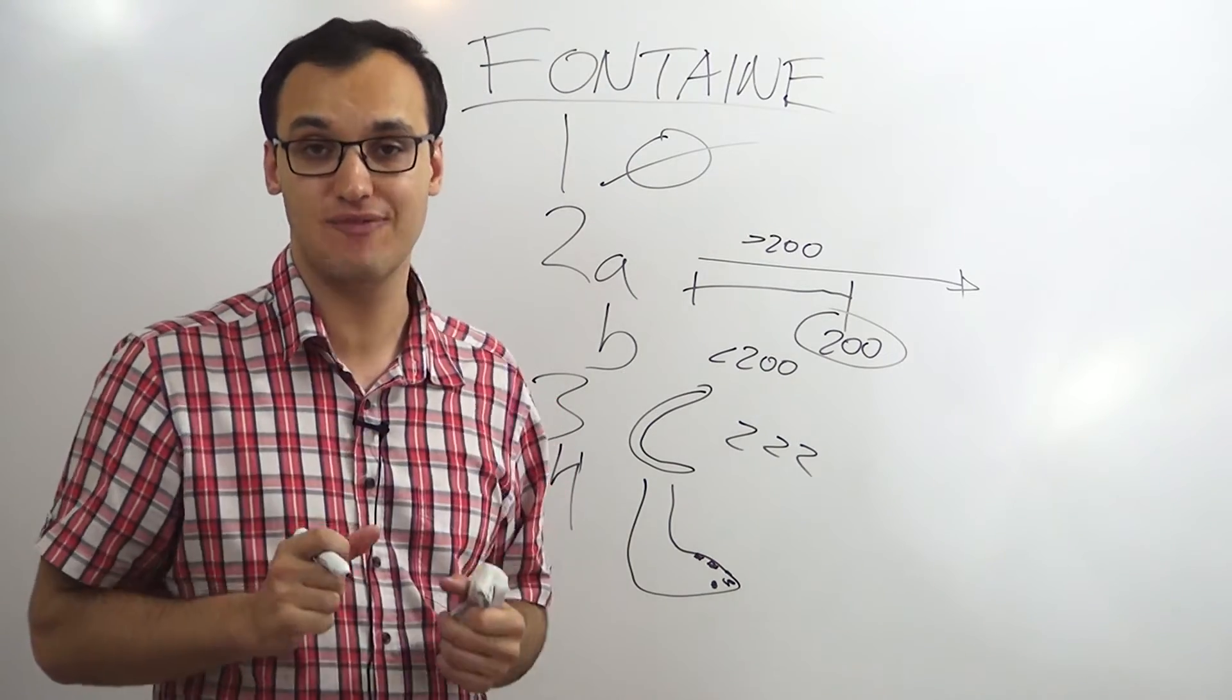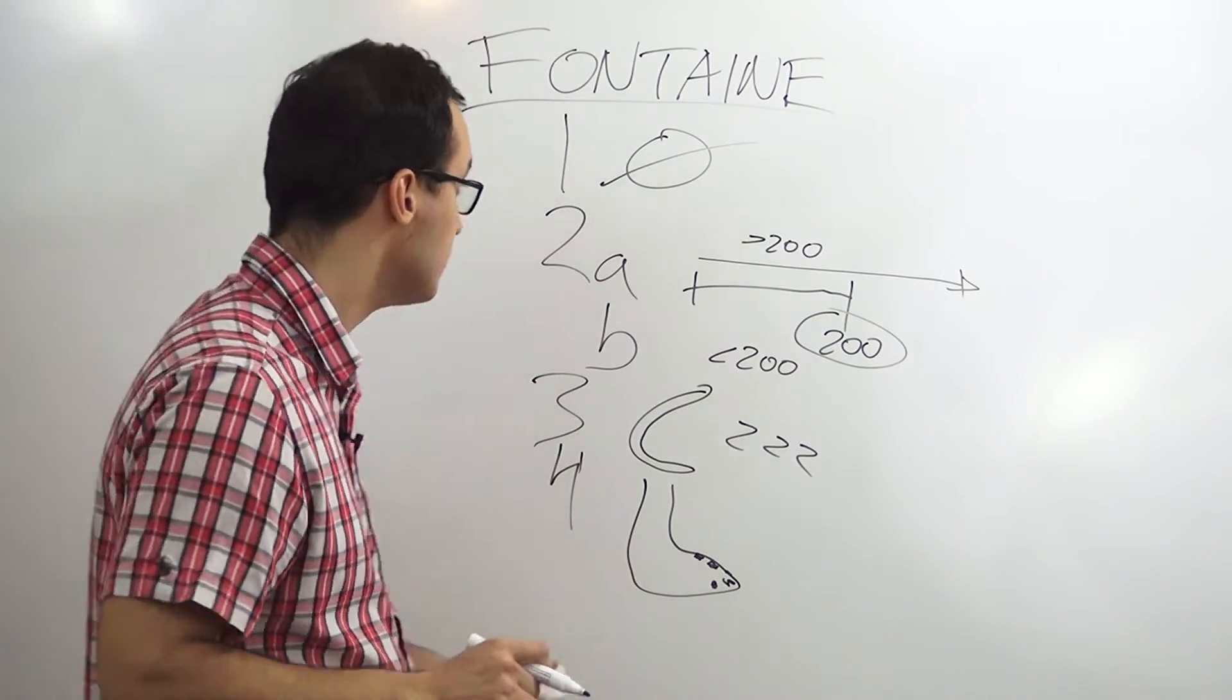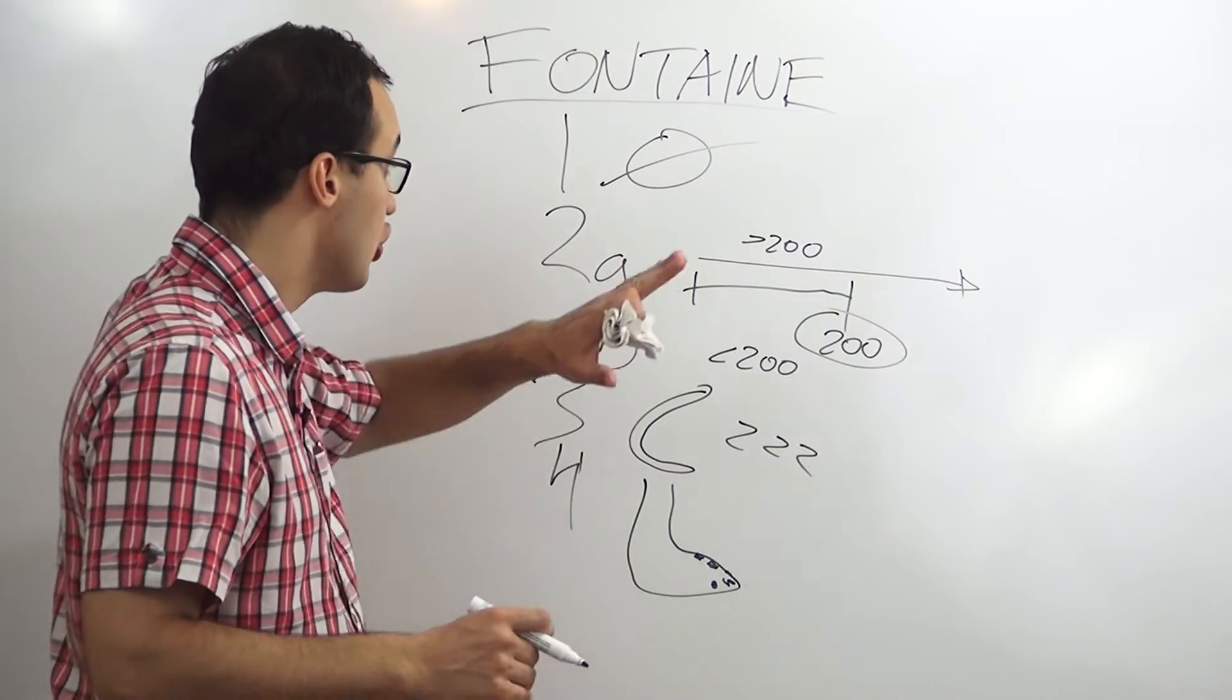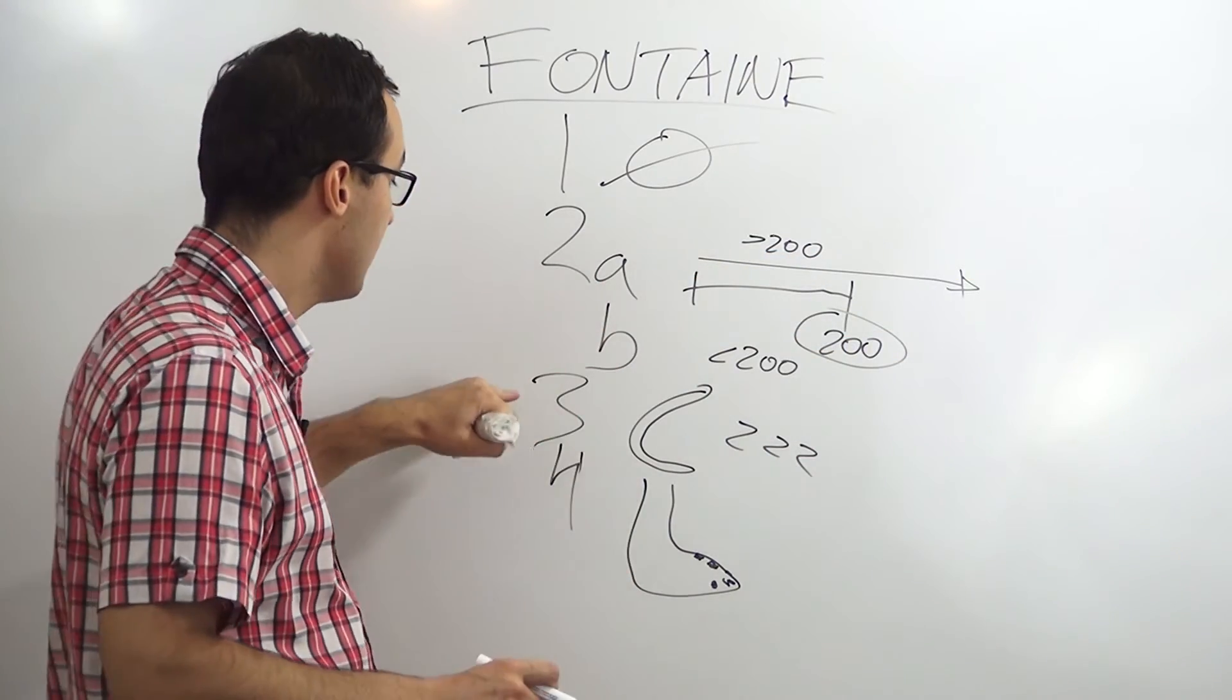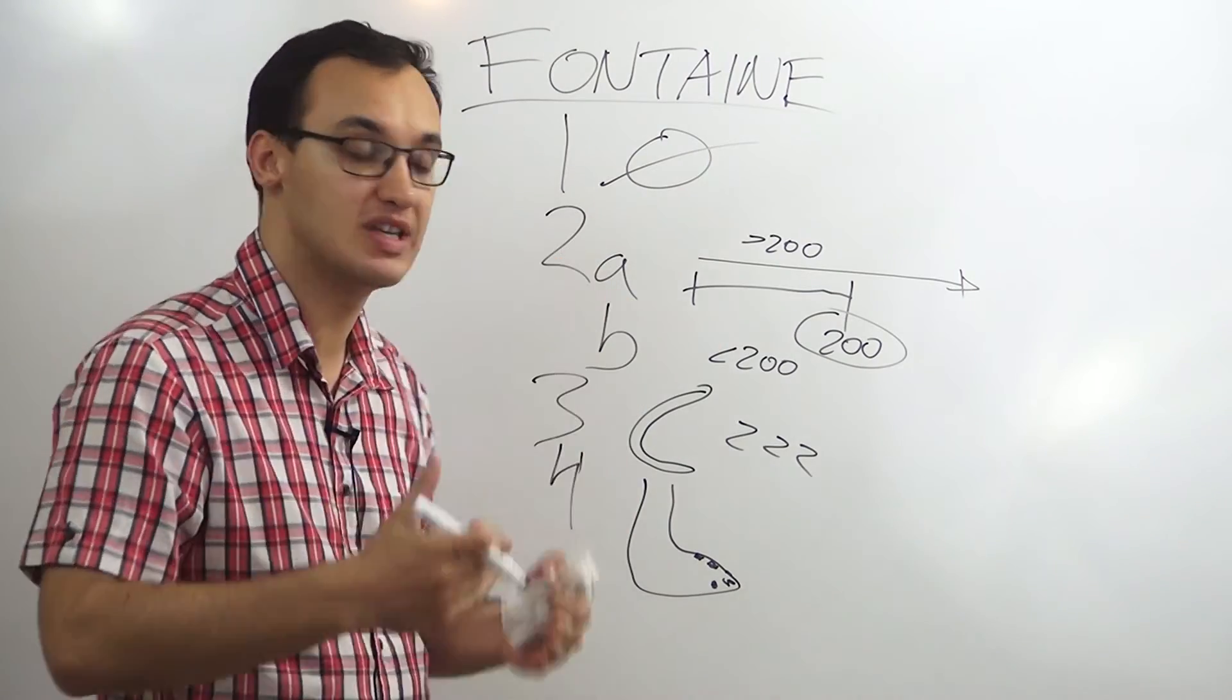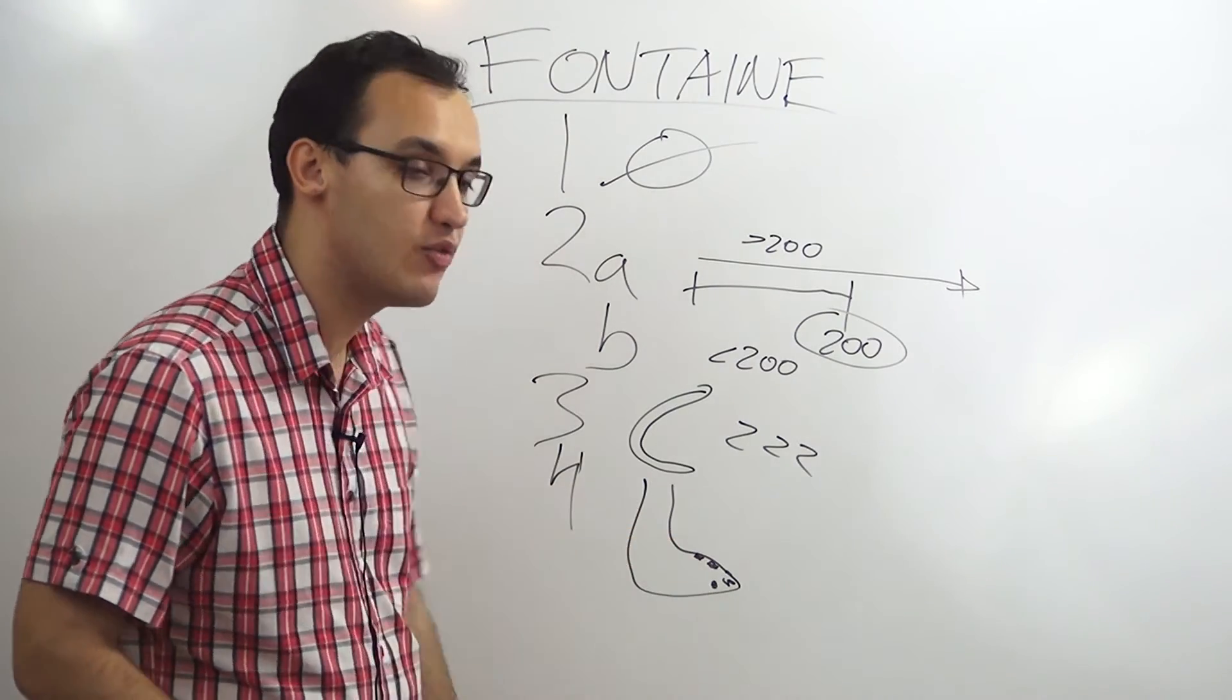These are the steps that you need to remember: first, no pain at all, asymptomatic; 2a, more than 200 meters; 2b, less than 200 meters; three, there's a moon standing for nocturnal pain, meaning during the night; or fourth, you have really severe pain with necrosis and death of your toes.